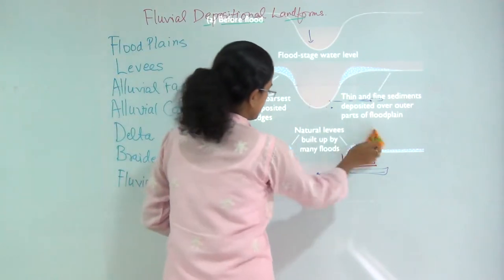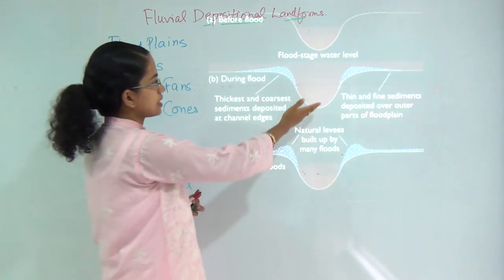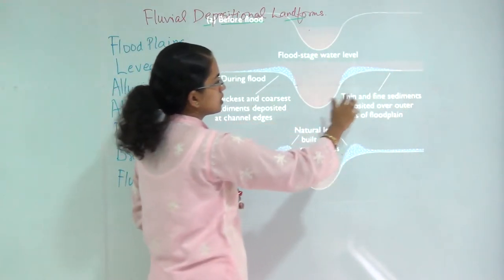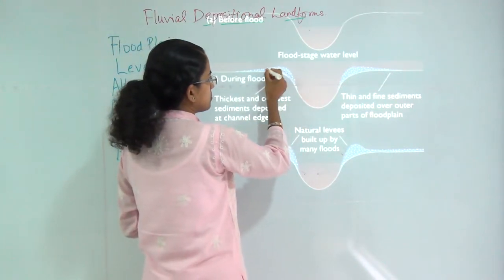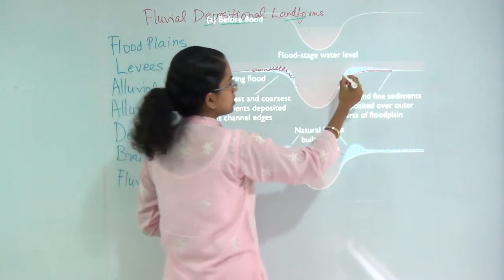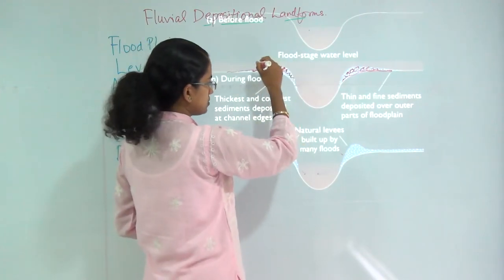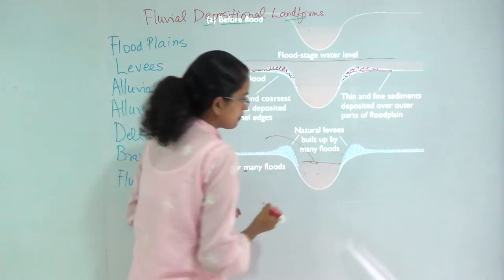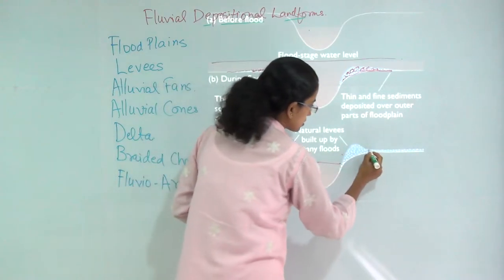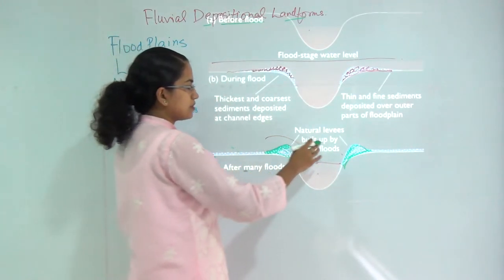Let's see how levees are formed. The first diagram shows the normal water level. During a flood or increase in river flow, the water rises and spreads across the margins, depositing fine sediments along the floodplains on both sides of the river embankment. After the flood recedes back to normal water level, these deposits remain on either side of the river course — these structures are known as levees, and most of the time they are built by floods.